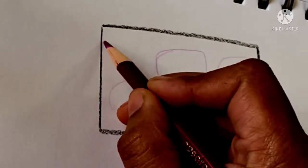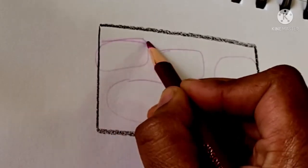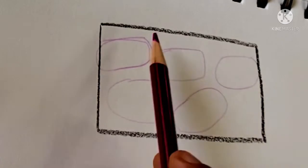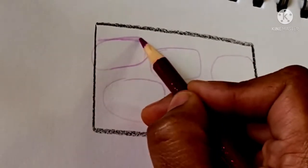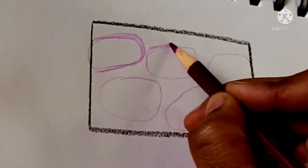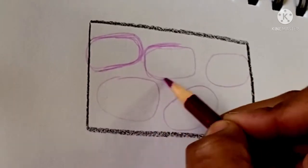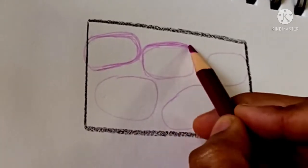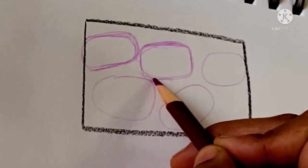When we draw the cross section of epididymis, we can see many ducts or many tubules. It is due to the highly convoluted appearance of epididymis.